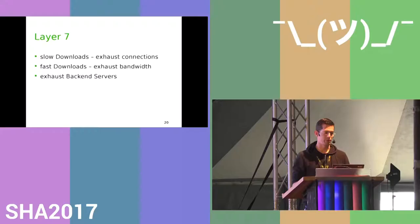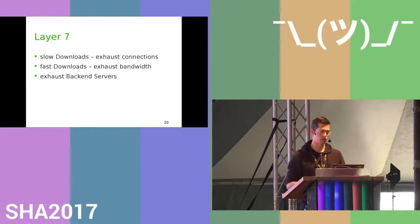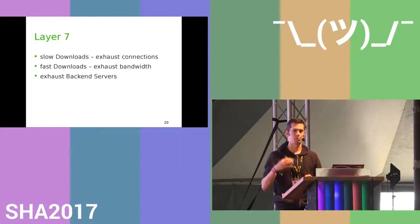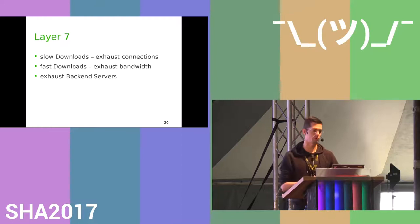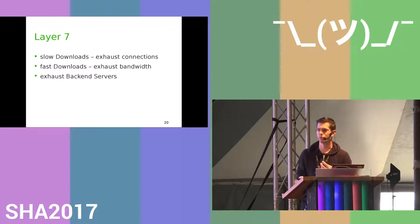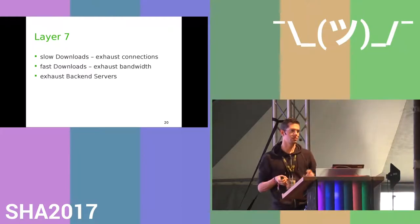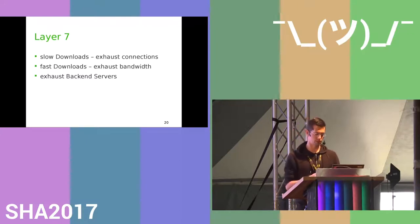There are many layer 7 attack variations. You can use slow downloads to exhaust connections — open a thousand connections and download at one byte per second. Or use fast downloads to exhaust the server's bandwidth. You can also exhaust back-end servers by putting variables into form fields or searches, causing them to be really busy and unable to answer.